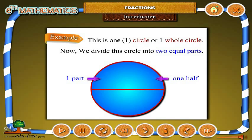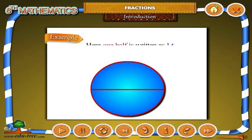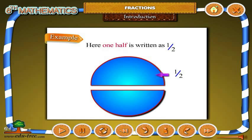Now, we divide this circle into two equal parts. Here, one half is written as one by two.